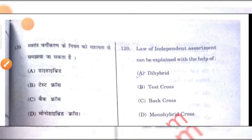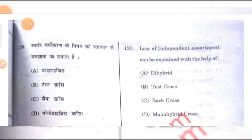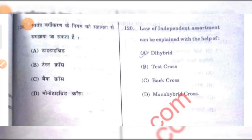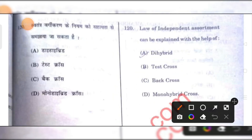Last question: the law of independent assortment can be explained with the help of a dihybrid cross. That is the right answer.